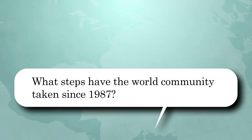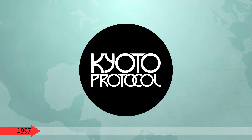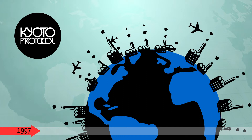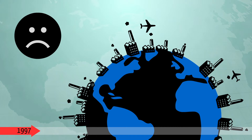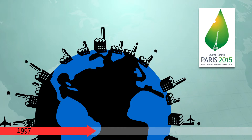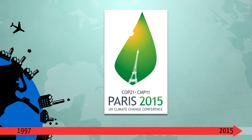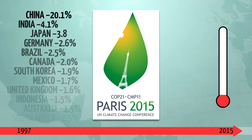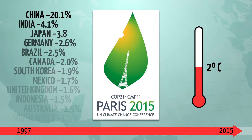What steps have the world community taken since 1987? Well, in 1997, the Kyoto Protocol was signed, as all the countries of the world aimed to combat the emission of greenhouse gases. It must be concluded, however, that many countries have not achieved these objectives because insufficient investments have been made in reducing emissions. The hopes are now pinned on the Paris Agreement of 2015. Many countries promise to work on the objectives of reducing greenhouse gas emissions. If this succeeds, global temperature rise this century should remain below 2 degrees Celsius.